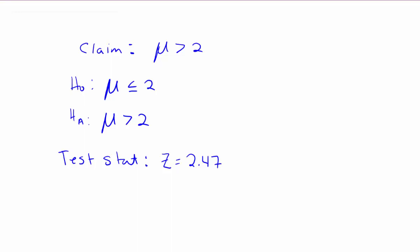In this problem we're looking at getting the p-value when our test statistic is 2.47 and our alternative hypothesis is the mean is greater than 2.